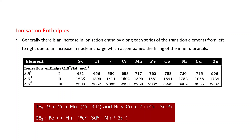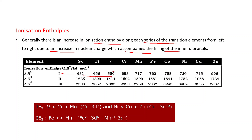Ionization enthalpy: generally there is an increase in ionization enthalpy along each series of the transition elements from left to right, due to an increase in nuclear charge accompanying the filling of inner D orbitals. But ionization enthalpy is also affected by electronic configuration — if half-filled or fully-filled configurations are present, they affect the ionization enthalpy. Looking at the first ionization enthalpy of the 3d series, it generally increases with some variations — certain points show a decrease, some a high increase.